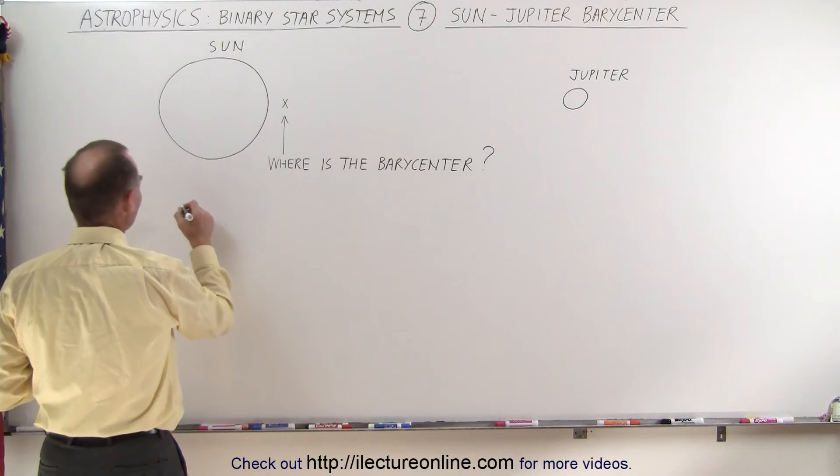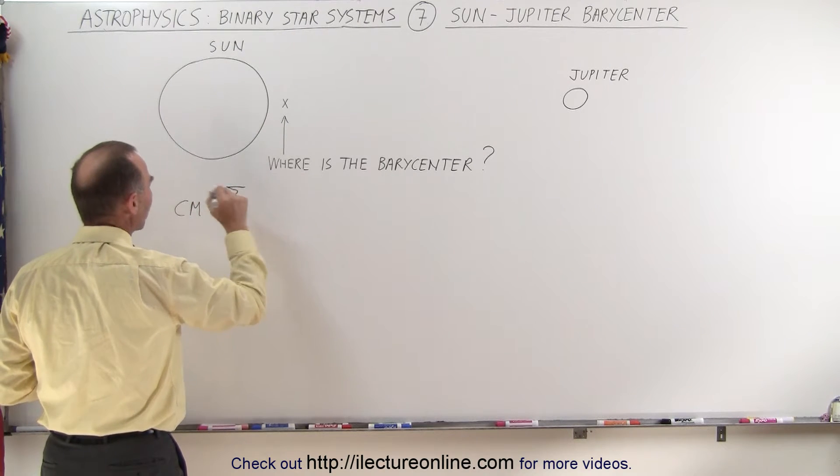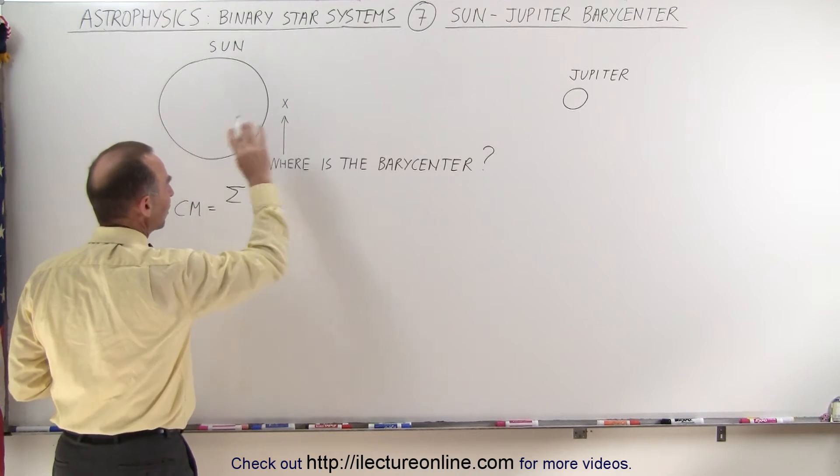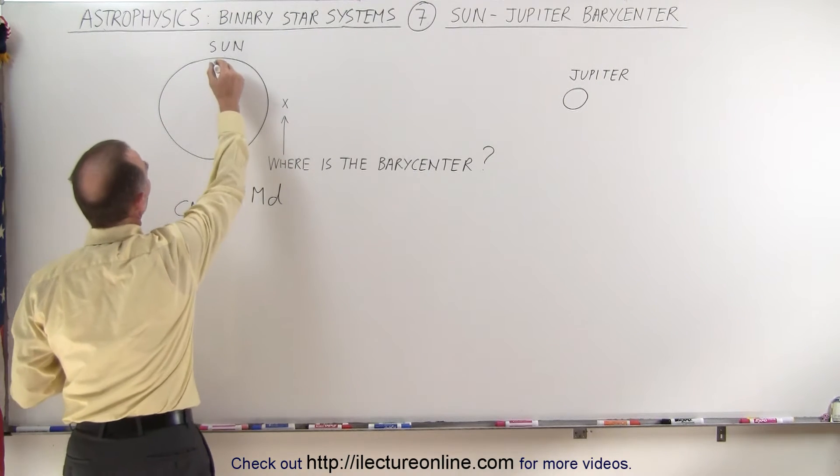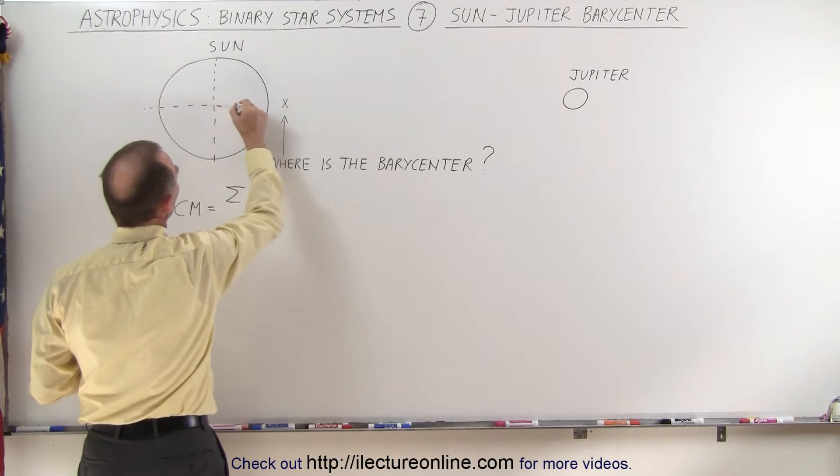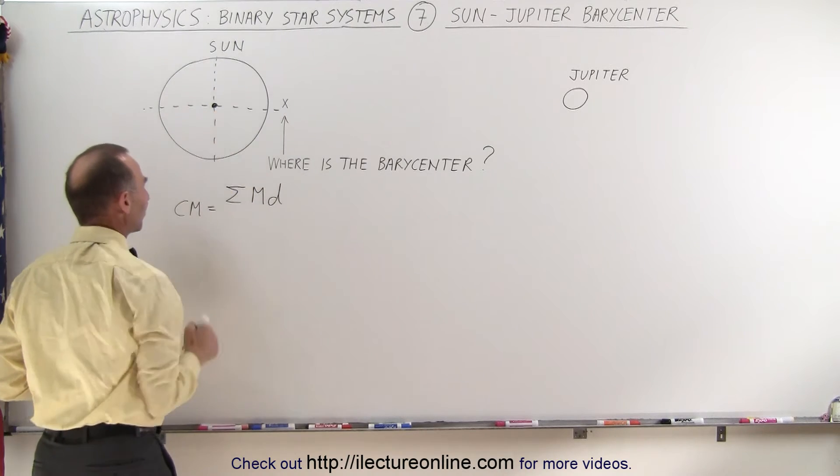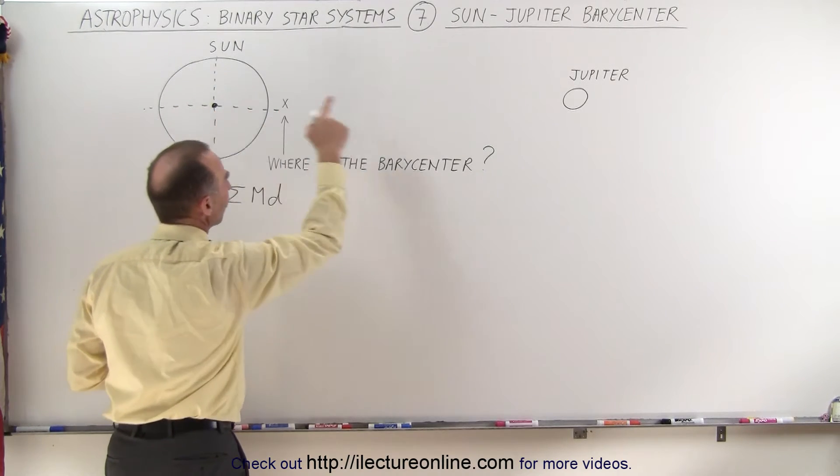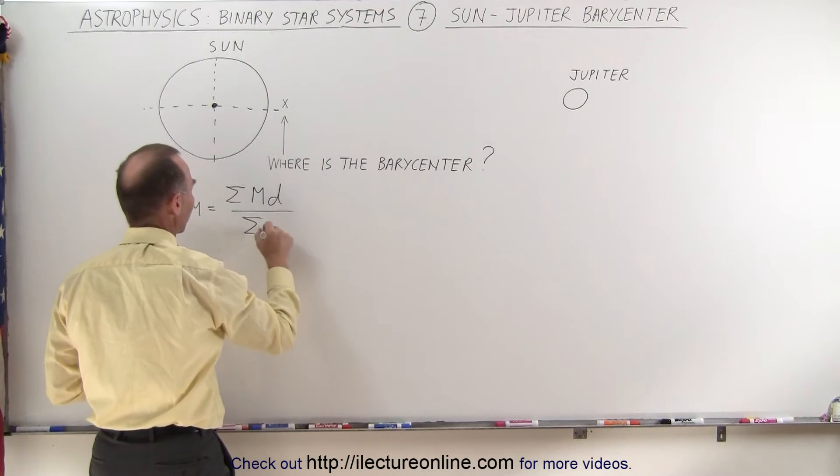To find the center of mass, we take the sum of the product of the masses of each object times the distance away from some central point. It would be easiest to put that point right in the center of the large object. So we put the reference point or origin right there at the center, and we divide that by the sum of all the masses.